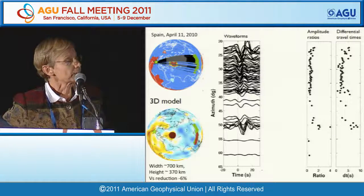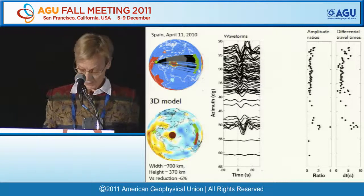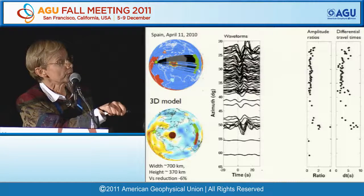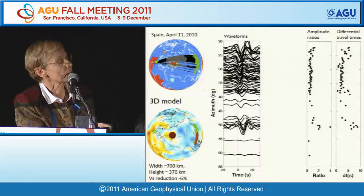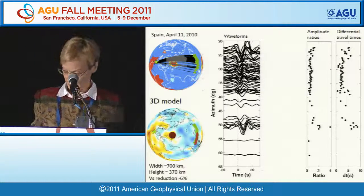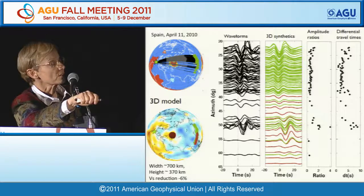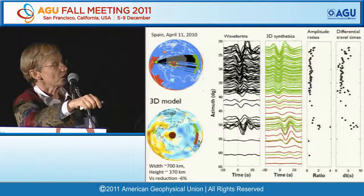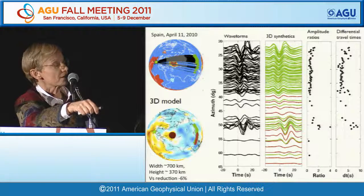We tried simple models—a cylindrical model—to explain the features in the data. The best-fitting model requires a diameter of about 700 kilometers, a height of about 400 kilometers above the core-mantle boundary, and a velocity reduction of 6%. The corresponding synthetics reproduce the features in the data. This class of anomaly is resolvable by tomography at relatively small scales, and remarkably it is the only one of this scale visible in the tomographic models.